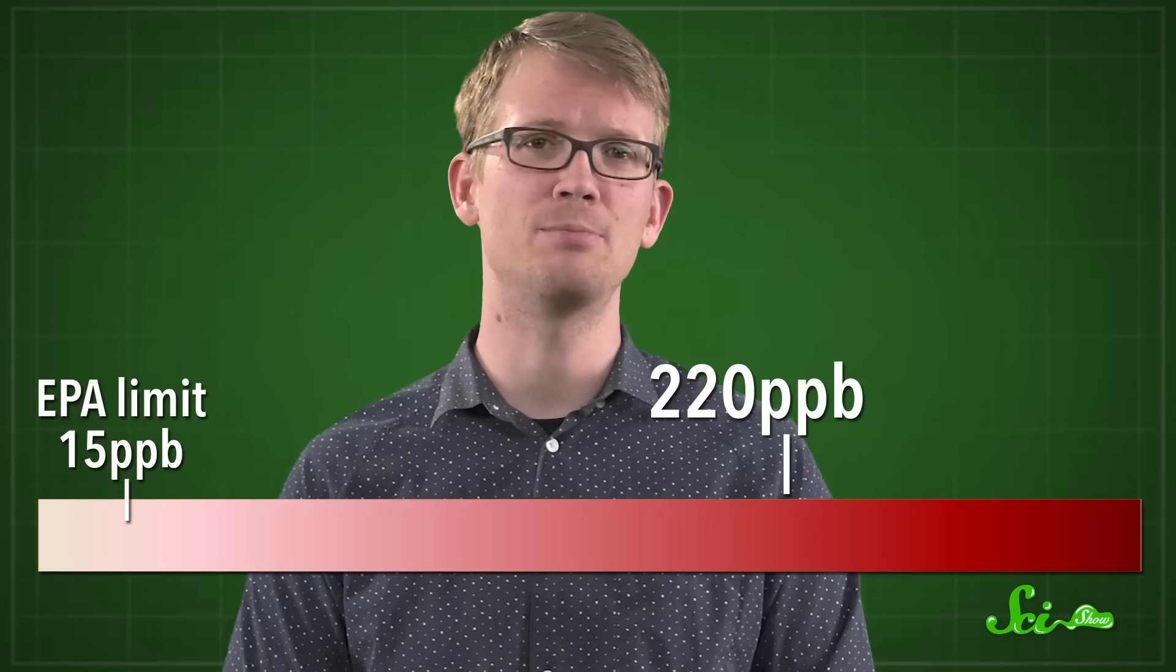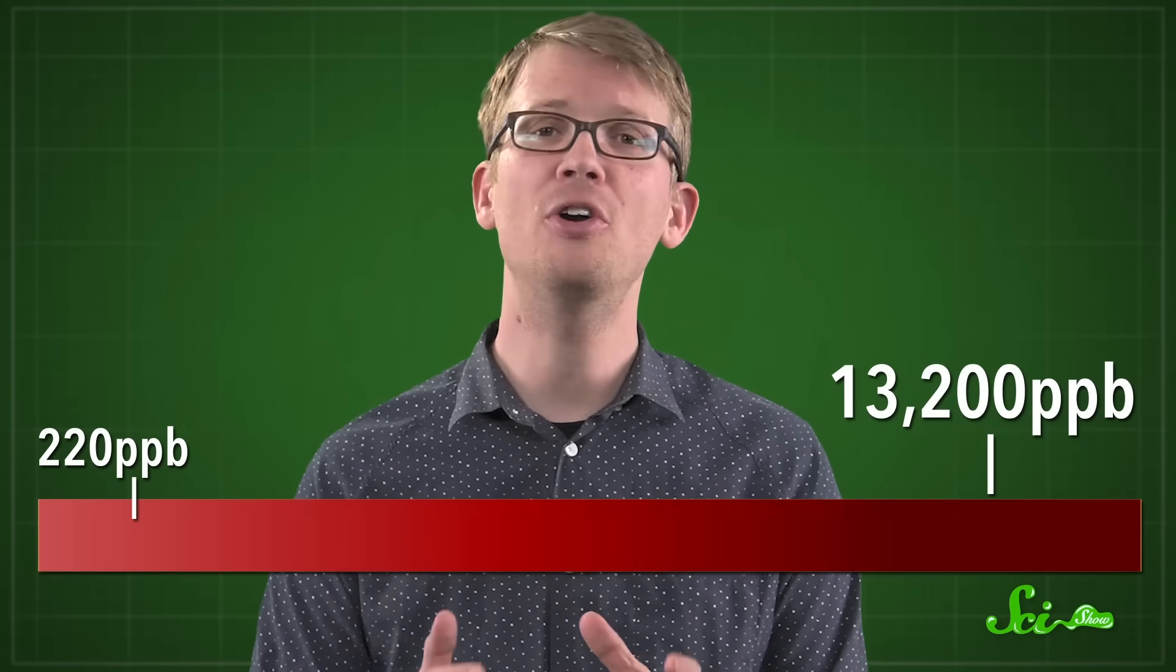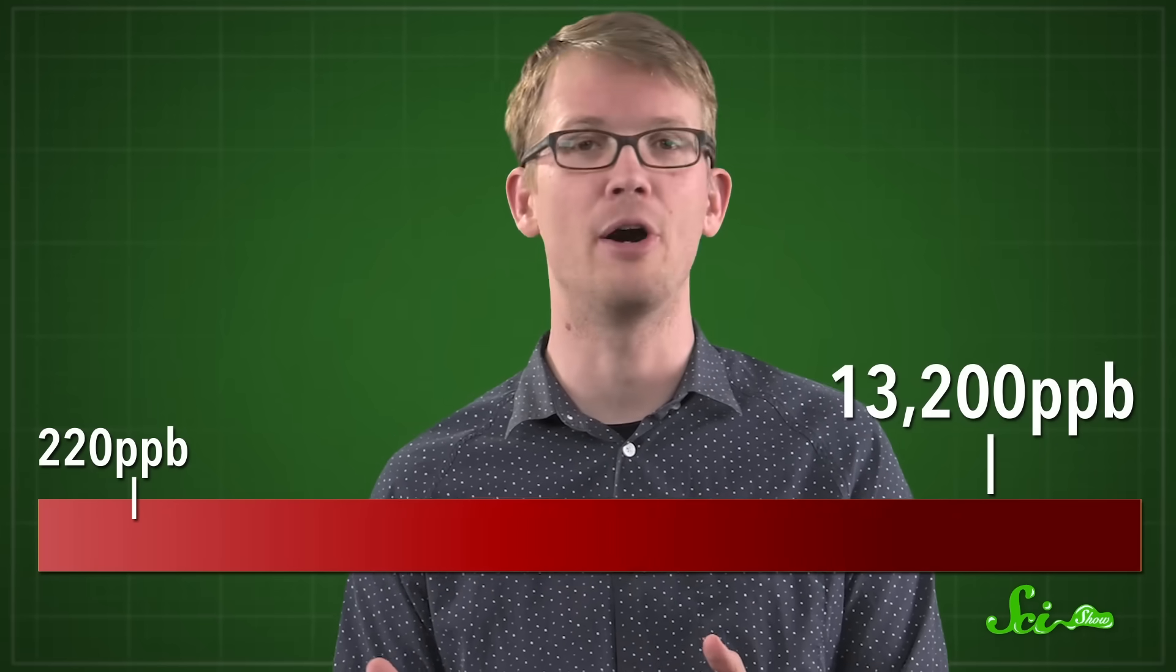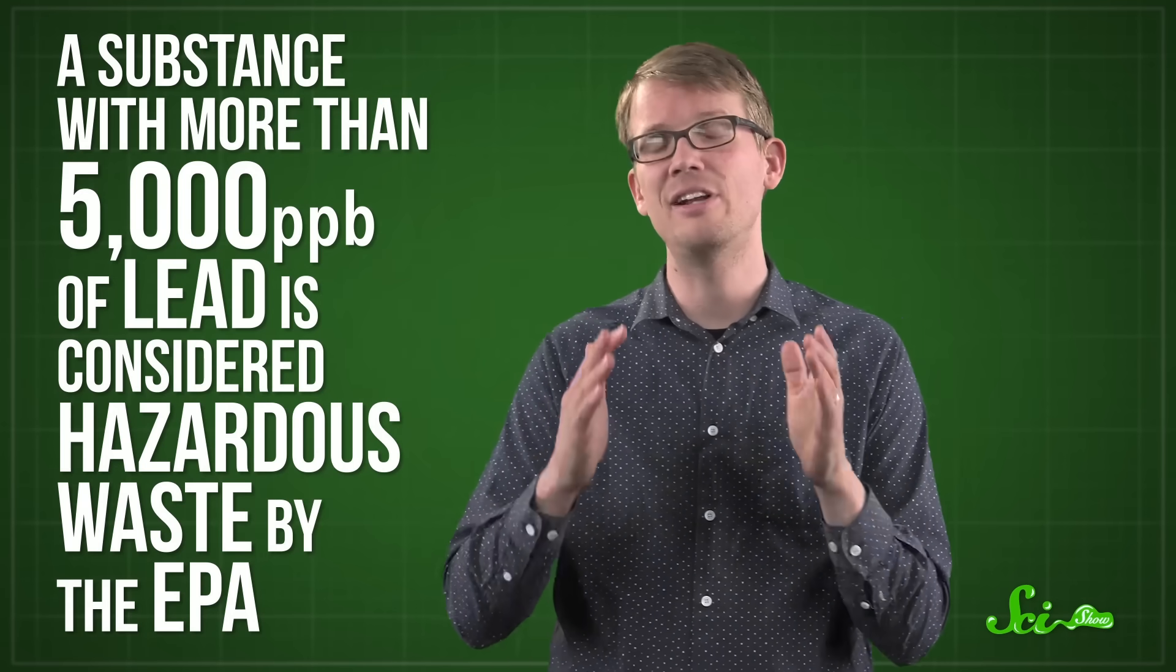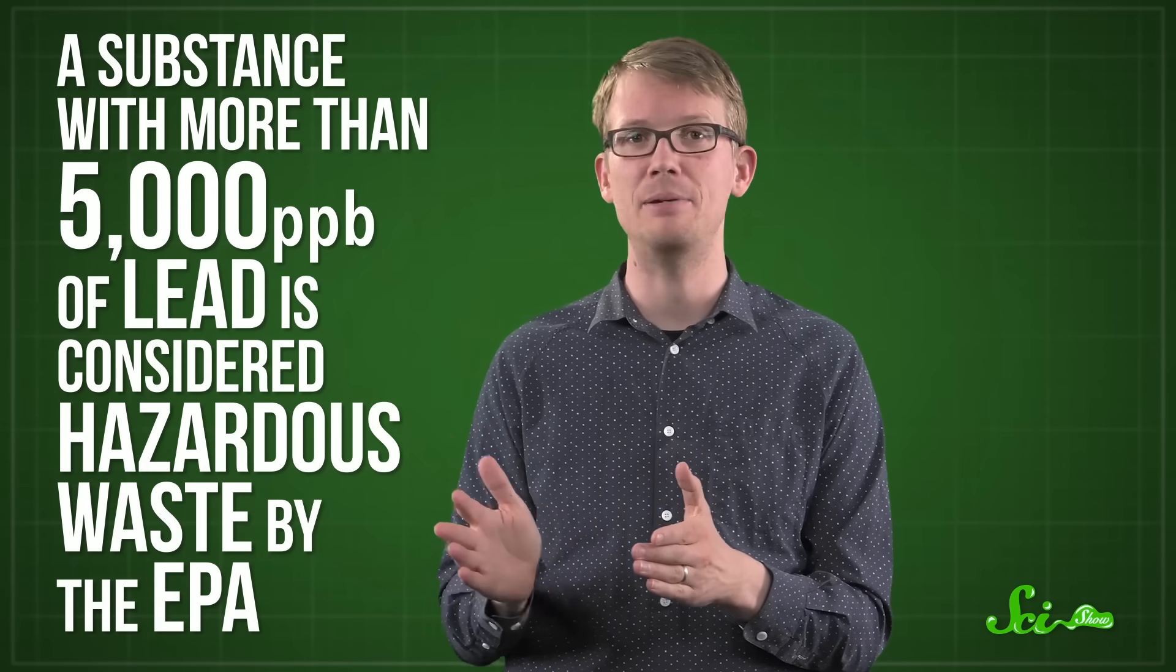When researchers from Virginia Tech sampled water from the same pipes at low, medium, and high flow rates, they found levels ranging from 220 parts per billion to a whopping 13,200 parts per billion. And to be totally clear about how intense this is, a substance with more than 5,000 parts per billion of lead is considered hazardous waste by the EPA.